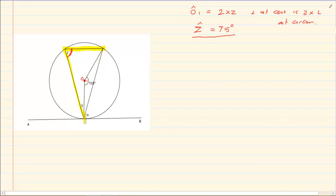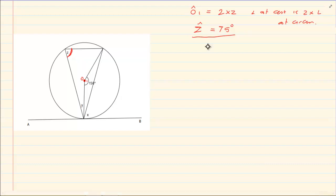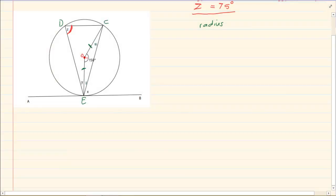Angle at centre is 2 times the angle at circumference. Now let's go to the radius — radius is the heart of this section. I have that OC is a radius and so is OE.